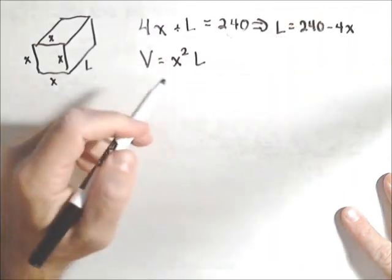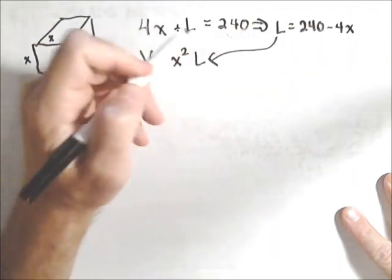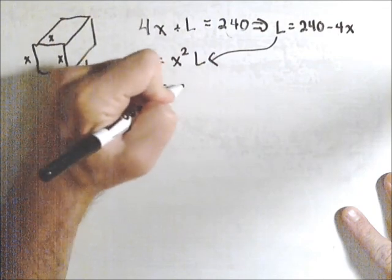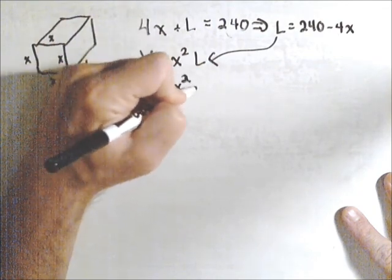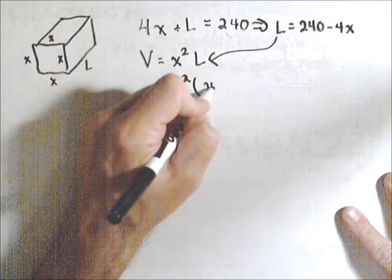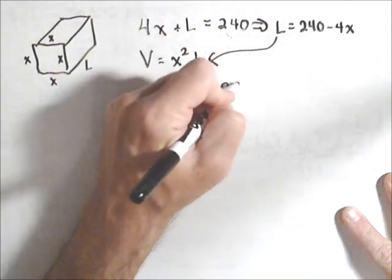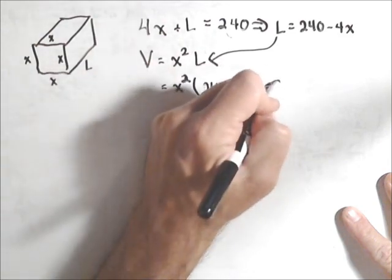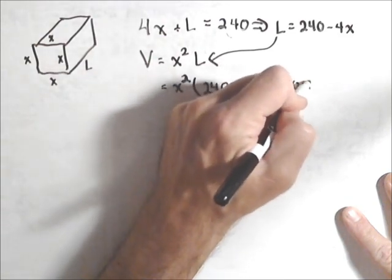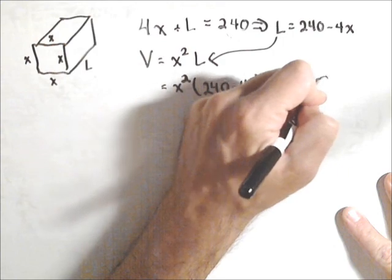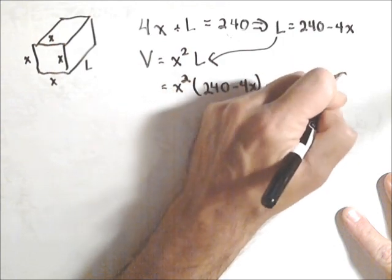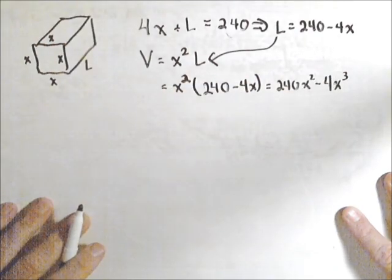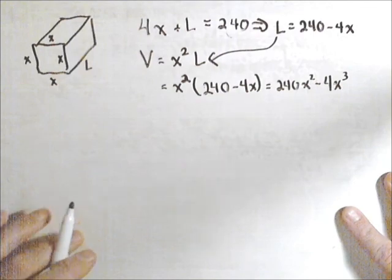And we're going to plug that into this L to get our volume in terms of just one variable. x squared times 240 minus 4x equals 240x squared minus 4x cubed. So there's our volume function.